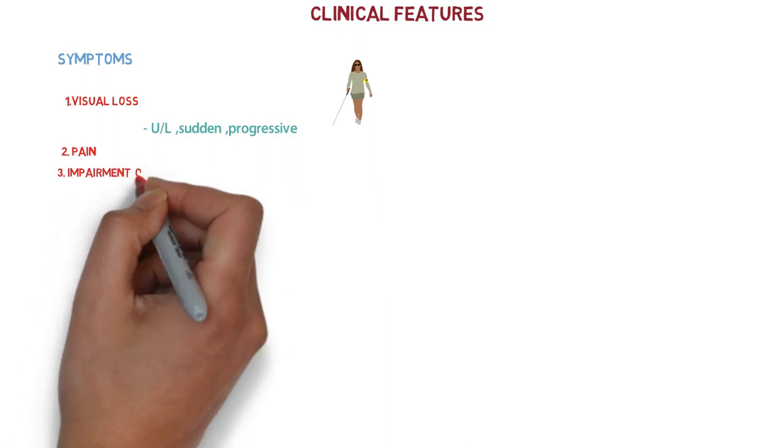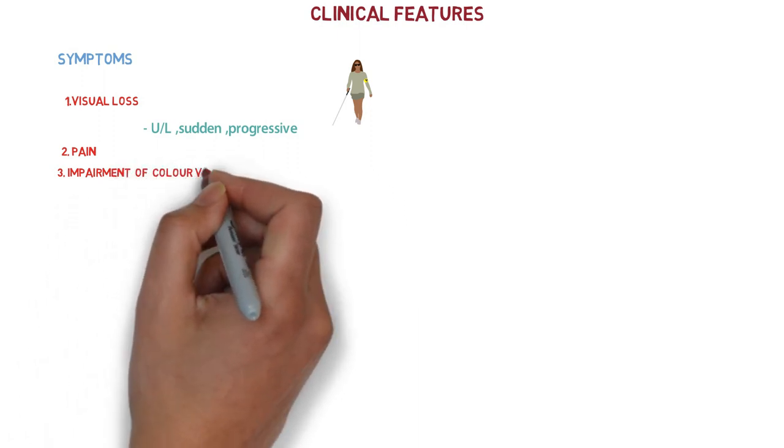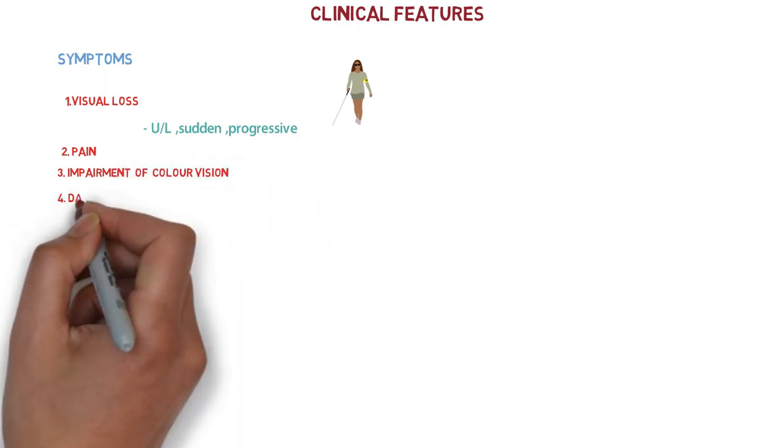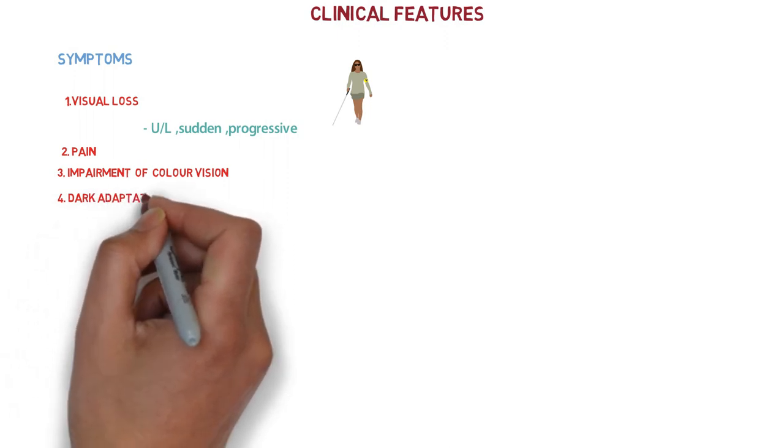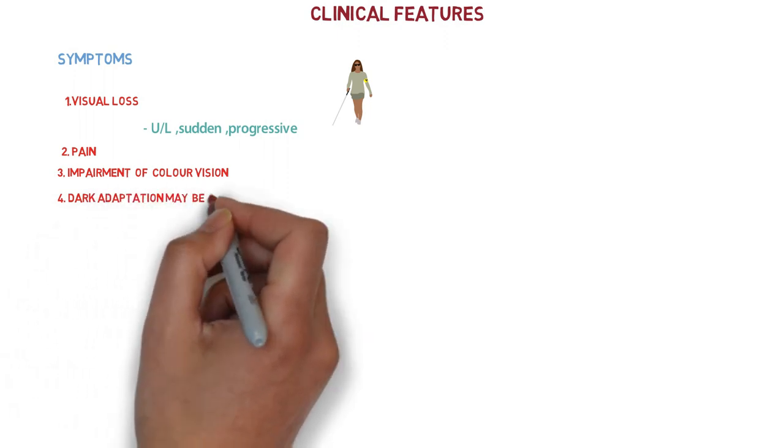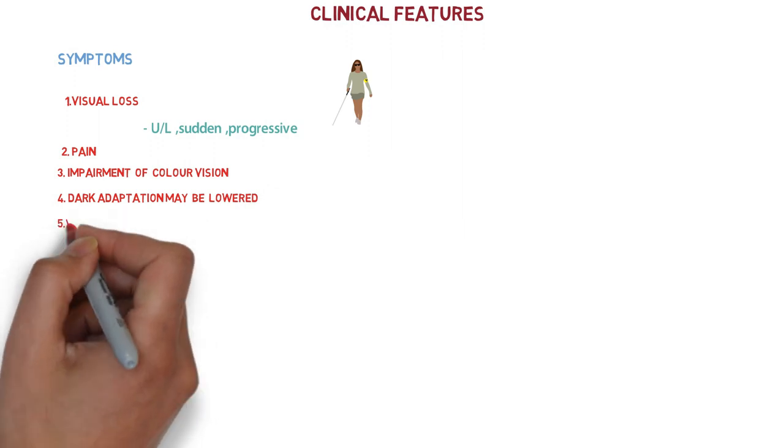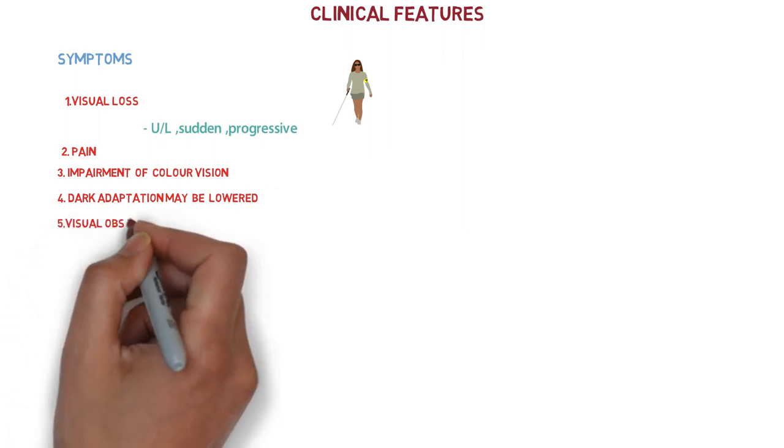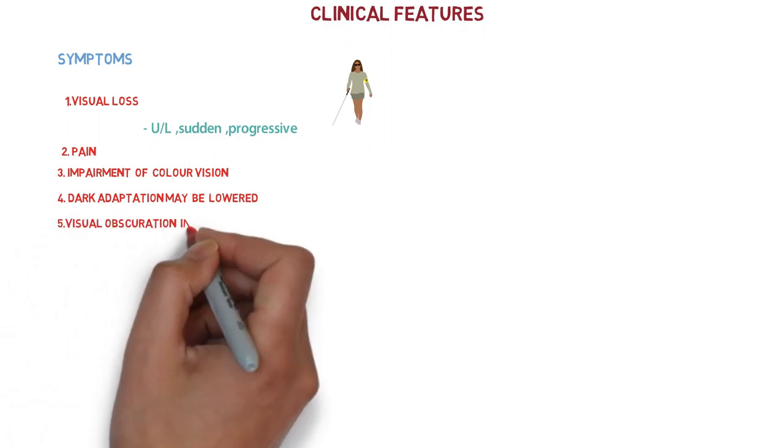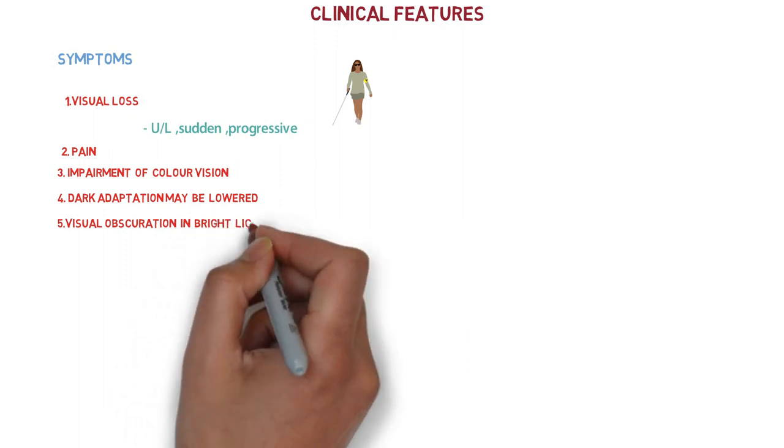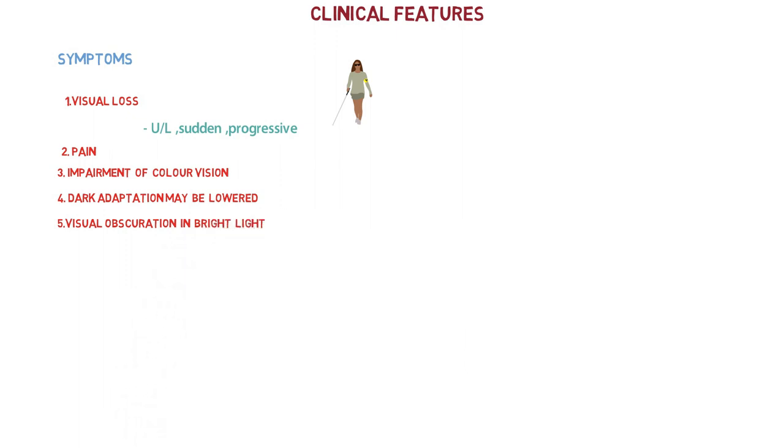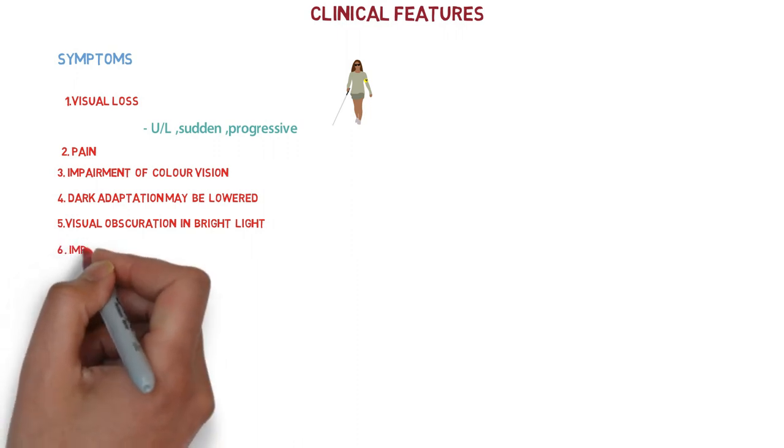There may be impairment of color vision. Dark adaptation may be decreased or lowered. There can be visual obscuration in bright light - episodic transient obscuration of vision on exhaustion and on exposure to heat which recovers on resting or moving away from the heat, which is called Uthoff's symptom.